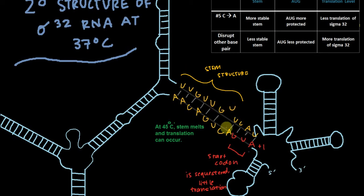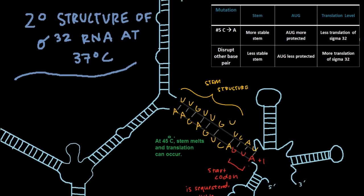So let's take a look at what happens when we make changes in this stem structure. How does that affect the level of translation of sigma 32 at various temperatures? So here's the first thing we want to change. We're going to change the number 5C to an A, so let's find out where that is. So if this C gets turned into an A,